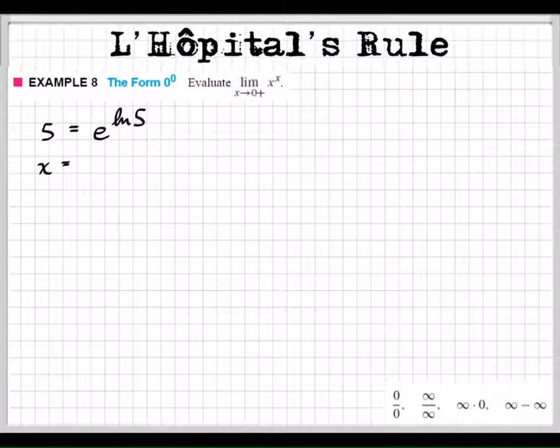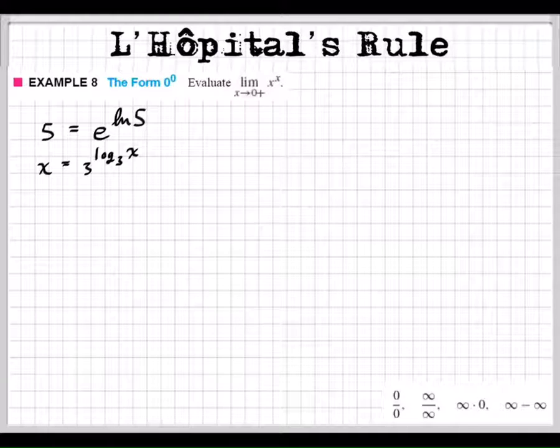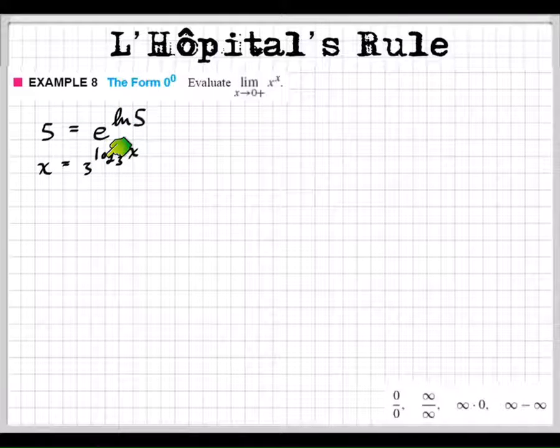X equals 5, no more 5's, 3 raised to the log base 3 of X. They're kind of the same exact thing because natural log is just log with a base e. So here's the thing. A base, like 3, is the opposite of a log.